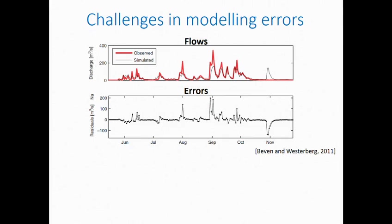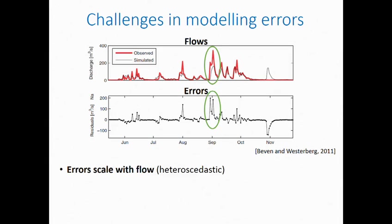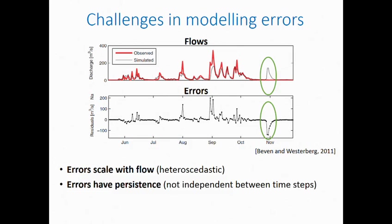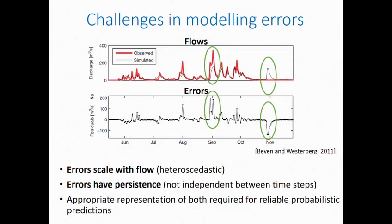I'll talk about some challenges in modelling errors. An example shows observed streamflow in red and predicted streamflow in black, with errors shown in the bottom panel. The errors scale with flow — we have larger errors associated with larger flows. This is what we refer to as heteroscedasticity. We also have persistence in errors, so when we have large errors at one time step we're likely to have large errors at the next time step as well. These features need to be appropriately represented in our uncertainty approaches to produce reliable probabilistic predictions.